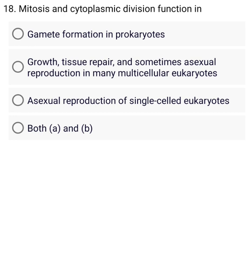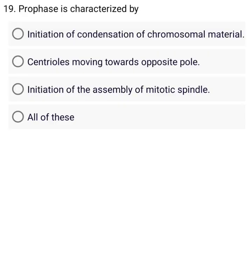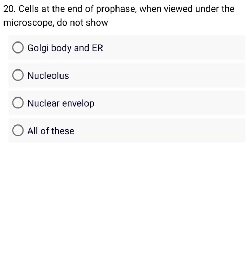A. Gamete formation in prokaryotes. B. Growth, tissue repair, and sometimes asexual reproduction in many multicellular eukaryotes. Prophase is characterized by A. Initiation of condensation of chromosomal material. B. Centrioles moving towards opposite poles. C. Initiation of —